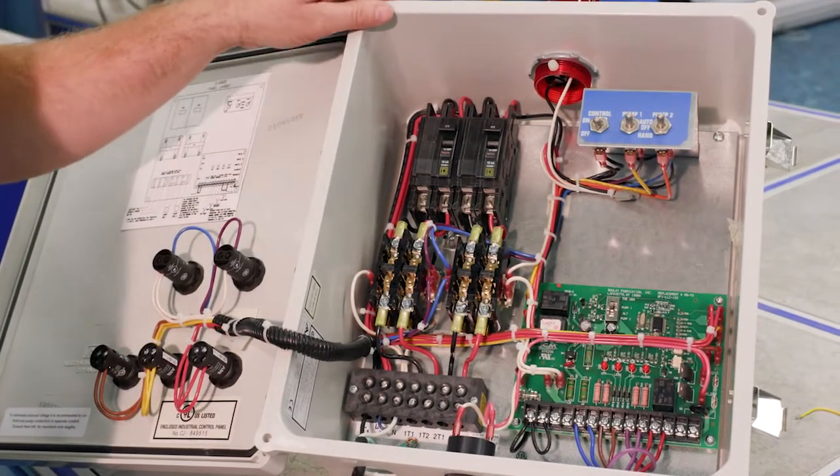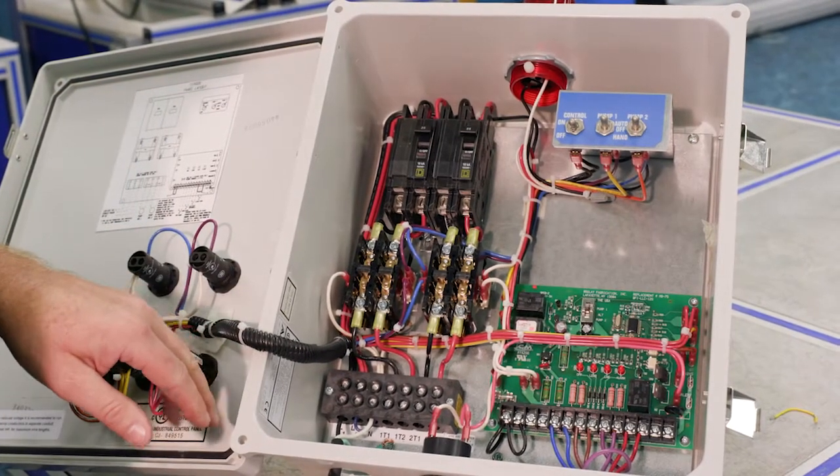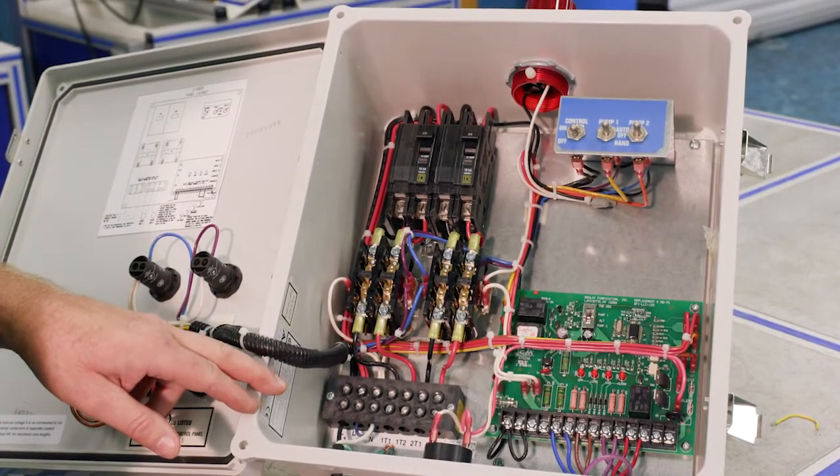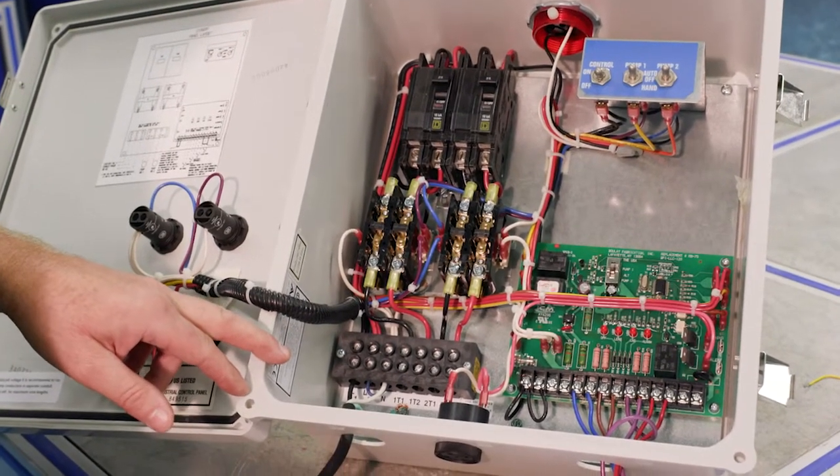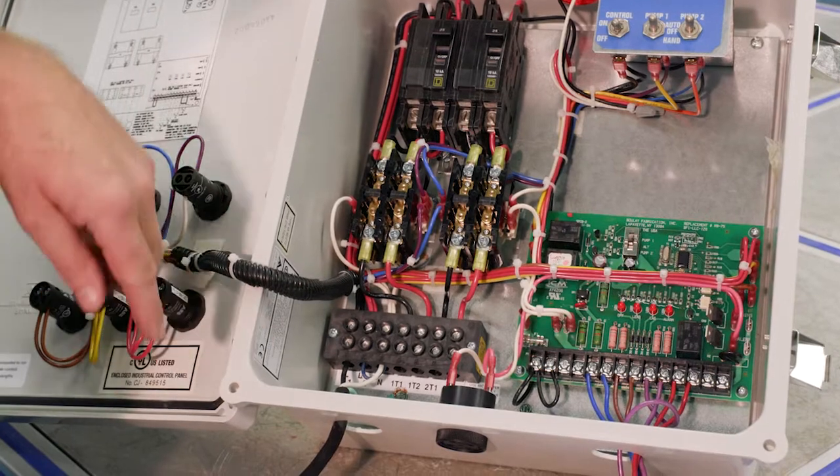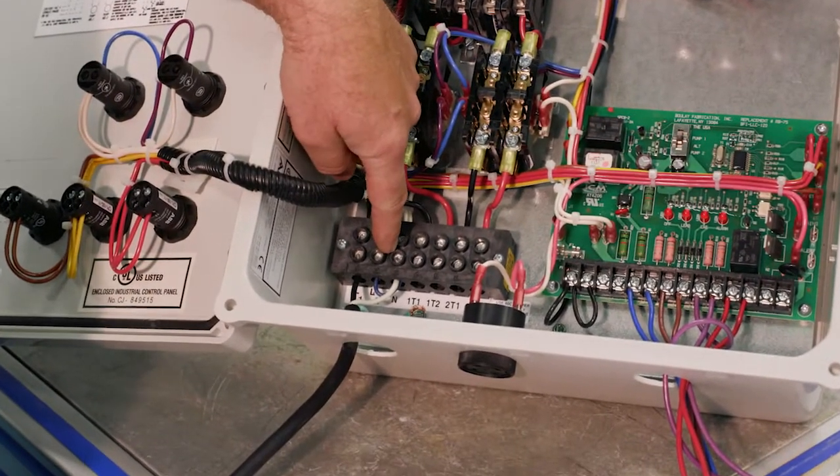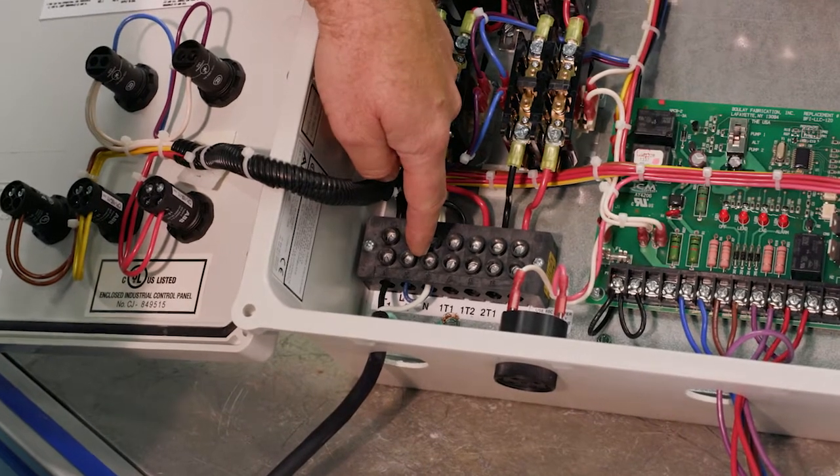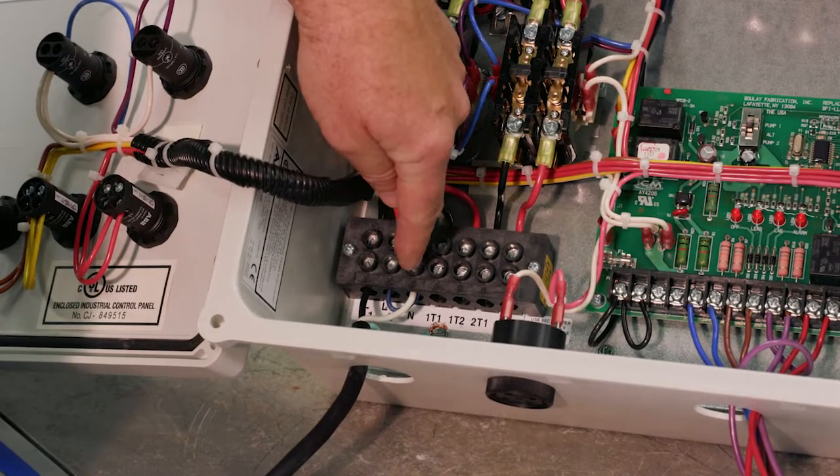The first note there is for 120 volt operation. If we look at that on the wiring diagram, the note says for 120 volt operation, use terminals L1 and N. So we're talking about this area here. And then it says jump terminals N and L2.